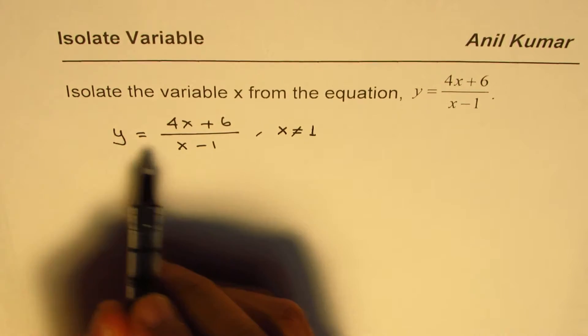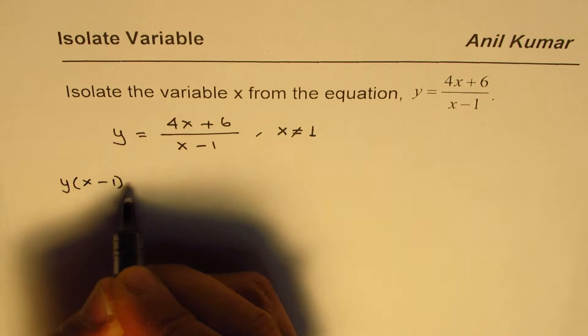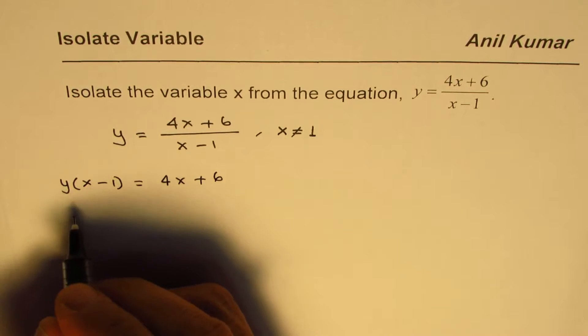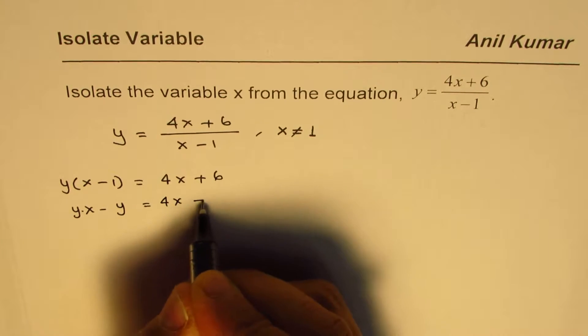To isolate x, we can cross multiply. So what we get is y times x minus 1 equals 4x plus 6. Now we can open the brackets. We get yx minus y equals 4x plus 6.